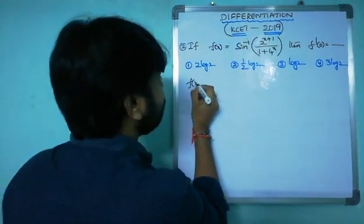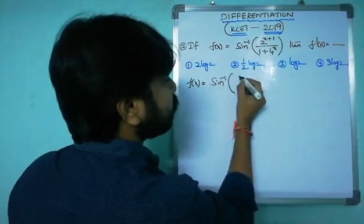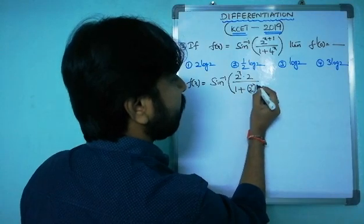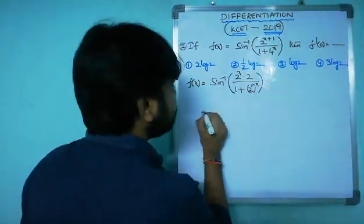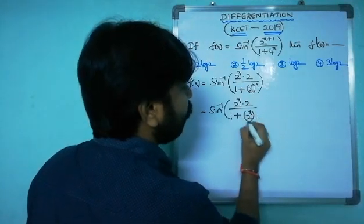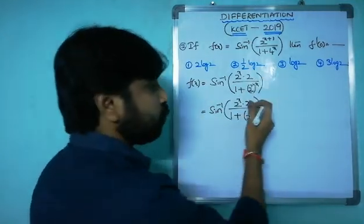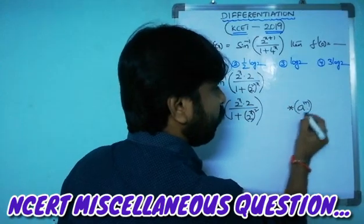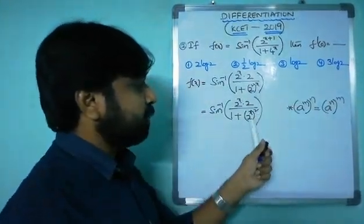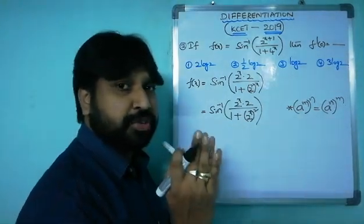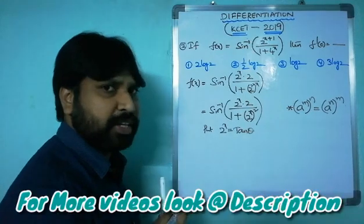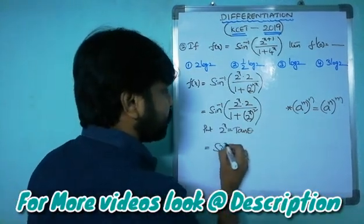Simplify f(x) = sin⁻¹(2^x · 2 / (1 + 4^x)). Since 4^x = (2²)^x = (2^x)², we get f(x) = sin⁻¹(2·2^x / (1 + (2^x)²)). Now substitute 2^x = tan θ, so f(x) = sin⁻¹(2·tan θ / (1 + tan²θ)).